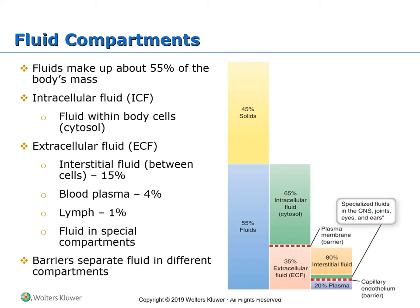We'll start by discussing different types of fluid compartments. According to where they are located, fluid in our body can be classified as intracellular or extracellular. The intracellular fluid, or ICF, is obviously inside the cell — it's the fluid contained within the cells — and about two-thirds to three-fourths of all body fluids are contained inside the cells, in what is called the cytosol.